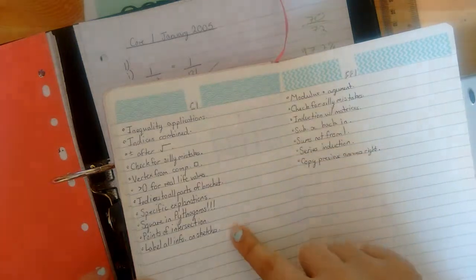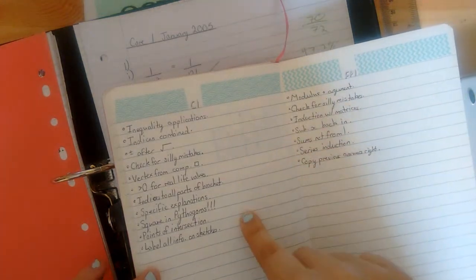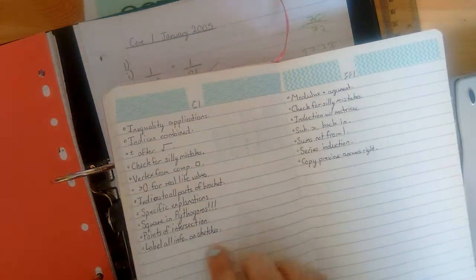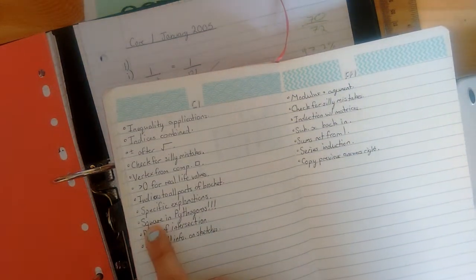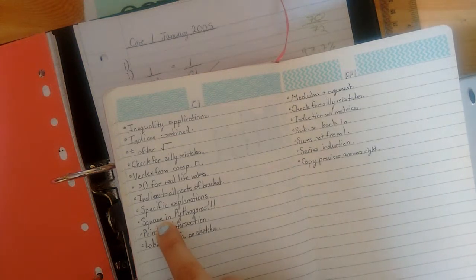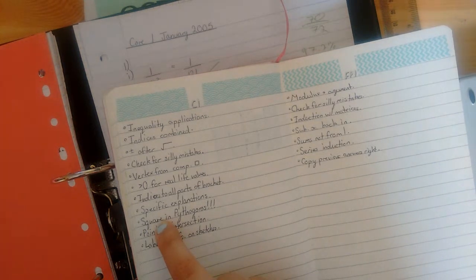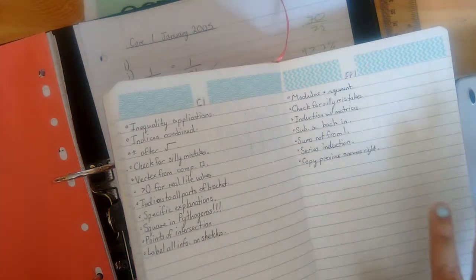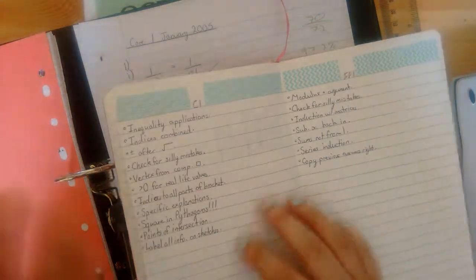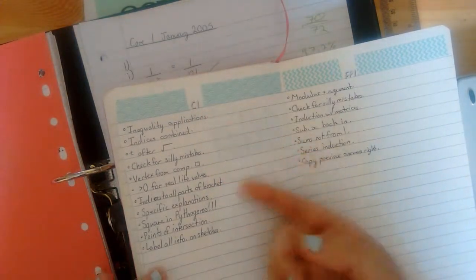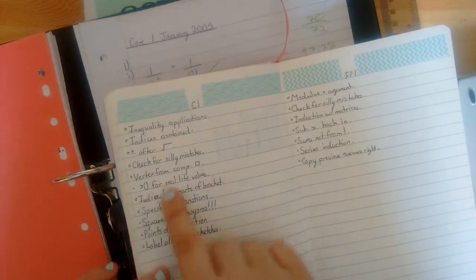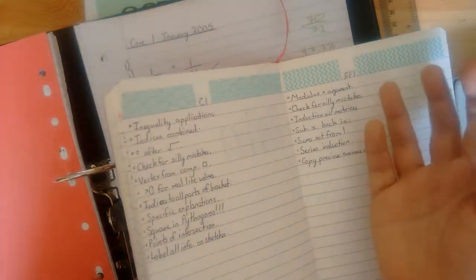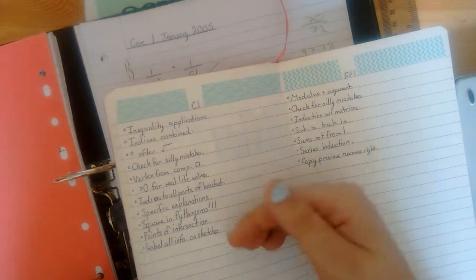So obviously here I was quite angry that I forgot to square the two numbers inside the square root in Pythagoras. I think that was just a cheap mistake, because I was tired. But if something came up more than once, like, I can see that there are a couple of instances of indices coming up here. So then I would go and revise indices, because I know that that's something that is a weaker point.